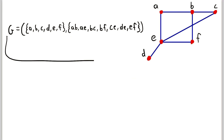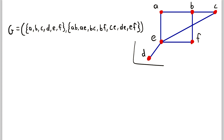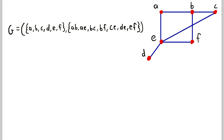Here we've got a magnificent graph. I've written it out as an ordered pair with its vertex set and its edge set, and of course we're calling it G. So we see this drawing of G here. It's got a few vertices, got some edges. It is a fine looking graph. So let's start off by looking at an example of a subgraph of G that is not a vertex-induced subgraph.